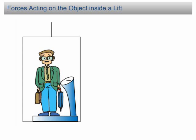Forces acting on the object inside a lift. When a man is standing in a lift, there are two forces acting on his body: the weight, which is equal to mg, and the normal reaction, denoted by the symbol R.